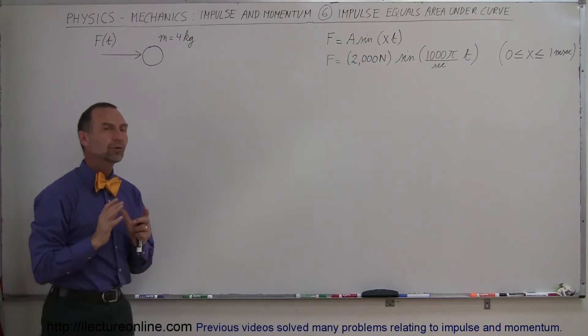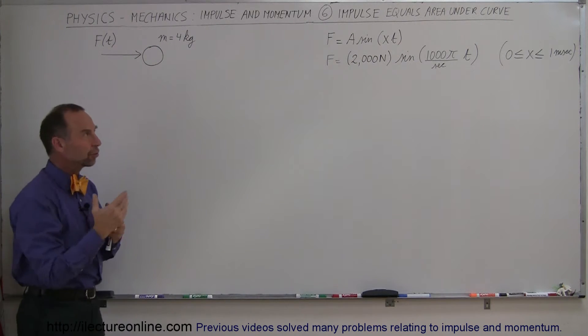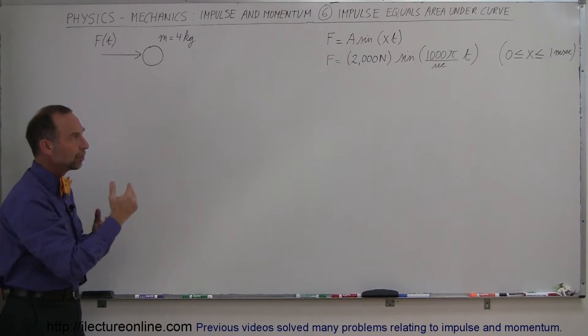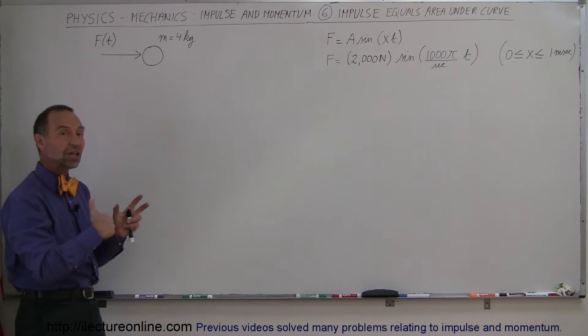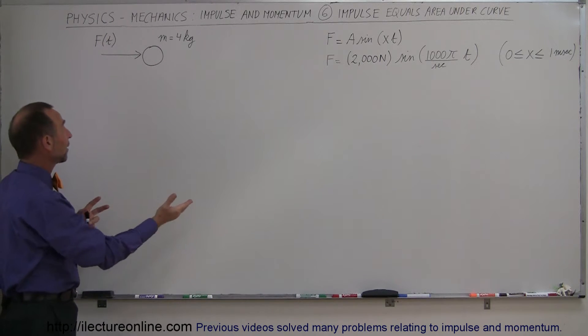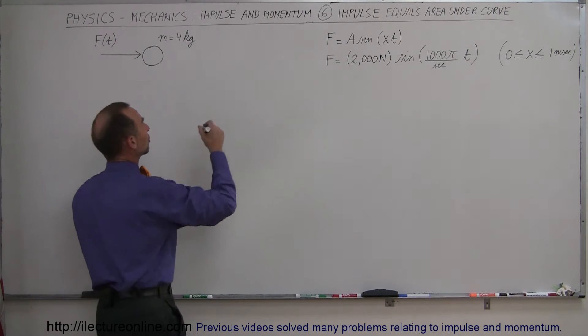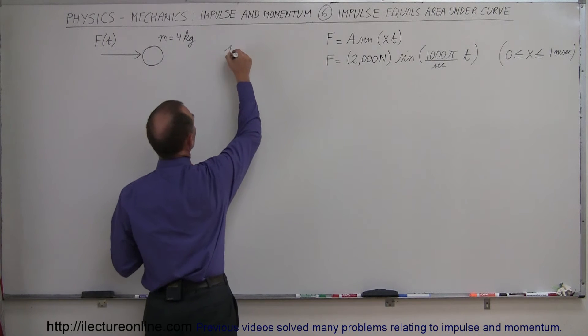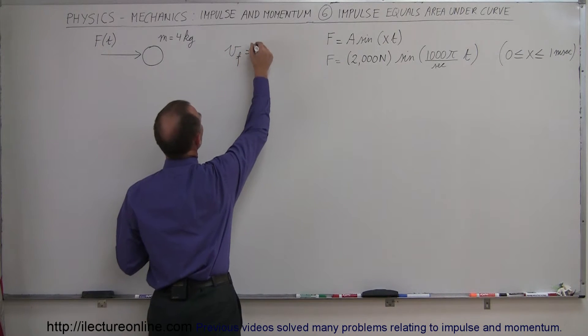What we're going to do here is find the graphical solution to the impulse and then use that to find the change in momentum, which will allow us to find the change in velocity. Ultimately, what we're trying to find here is v final of the object.